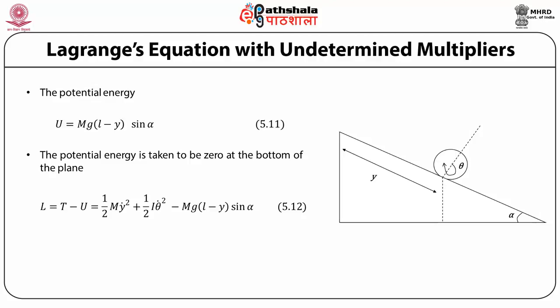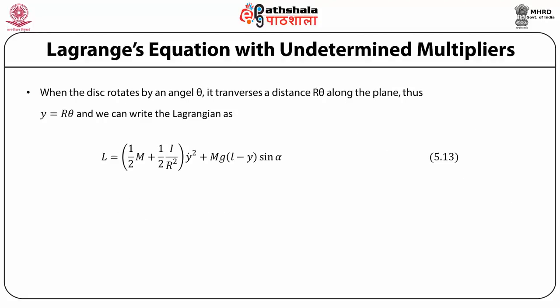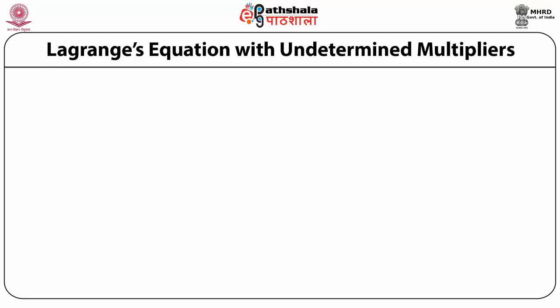The disk is under gravitational force with potential energy U = mg(L − y)sinα, where L is the length of the inclined plane and (L − y)sinα is the vertical distance as shown in the diagram. The potential energy is taken to be zero at the bottom of the plane. The Lagrangian is L = ½mẏ² + ½Iθ̇² − mg(L − y)sinα. When the disk rotates by an angle θ, it traverses a distance rθ along the plane, so y = rθ. Eliminating θ, the Lagrangian becomes L = ½(m + I/r²)ẏ² + mg(L − y)sinα.